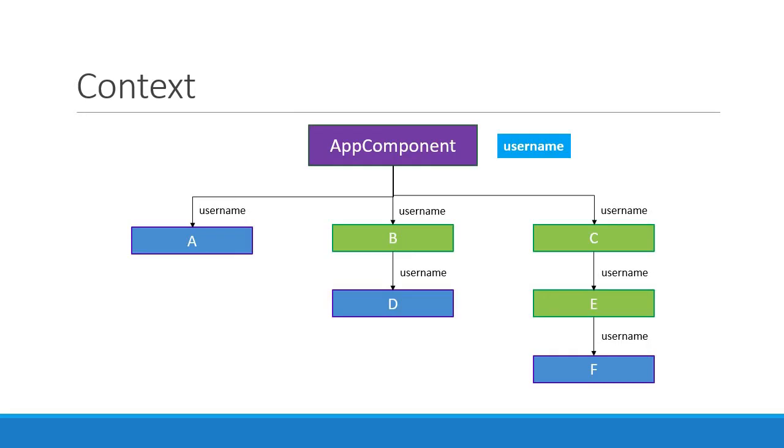Imagine if the component were to be nested 5 or 10 levels deep. All the components in between would have to forward the prop. This especially becomes a problem for certain types of props such as language preference, UI theme, and authenticated user, which are pretty much required by many components in your application.